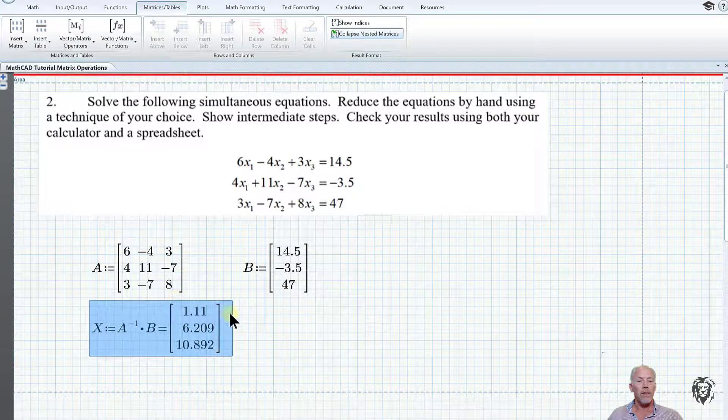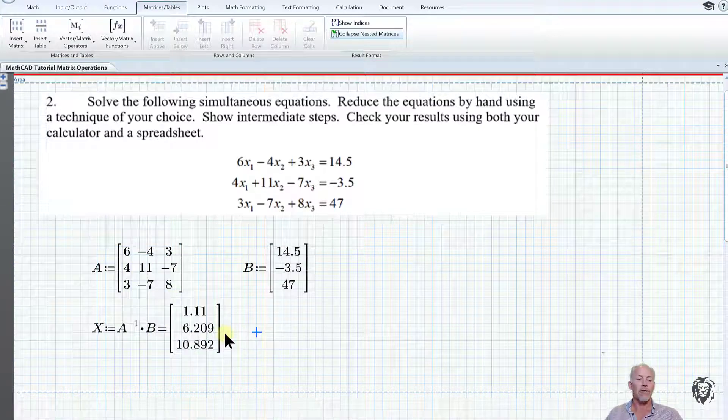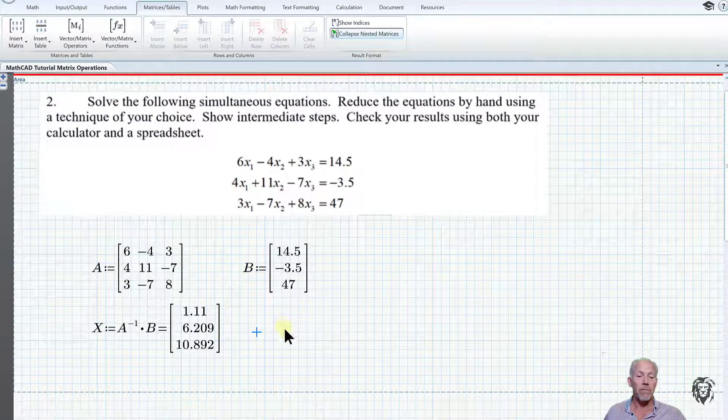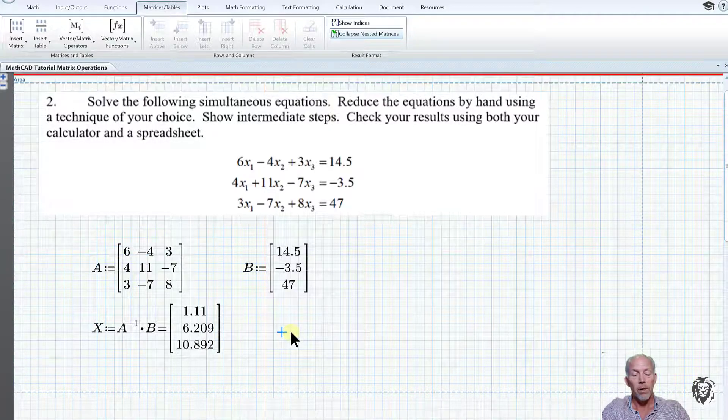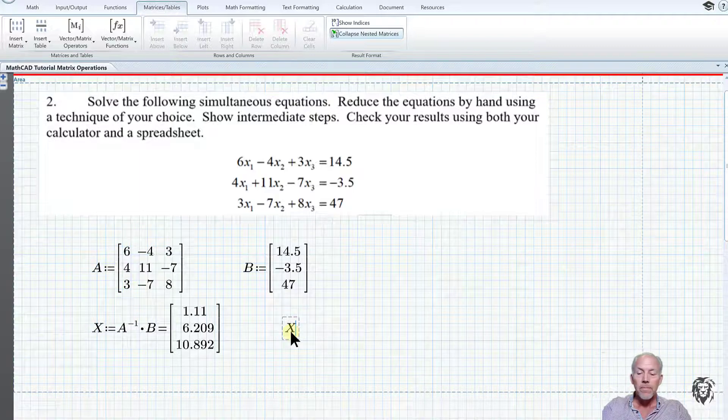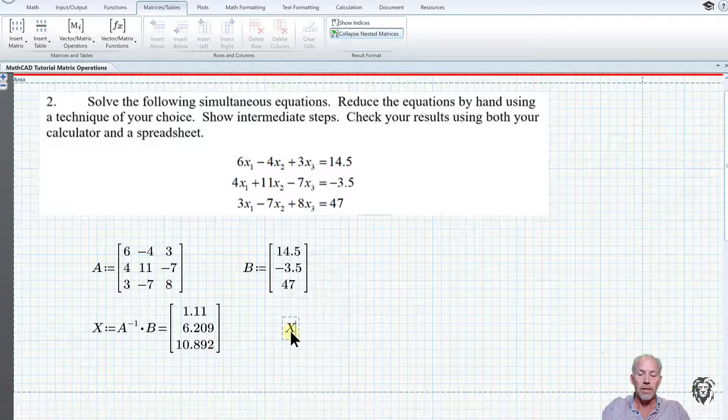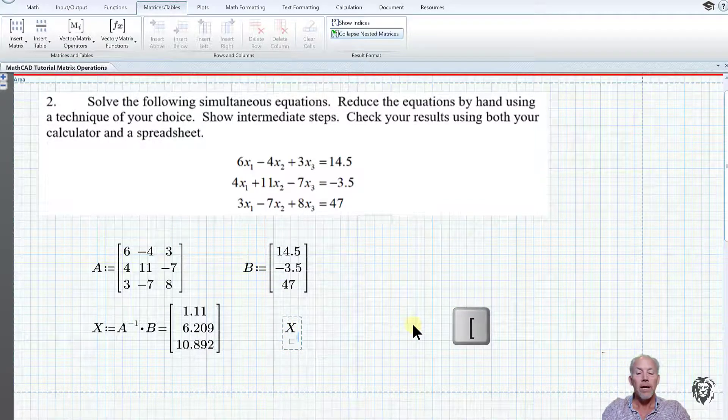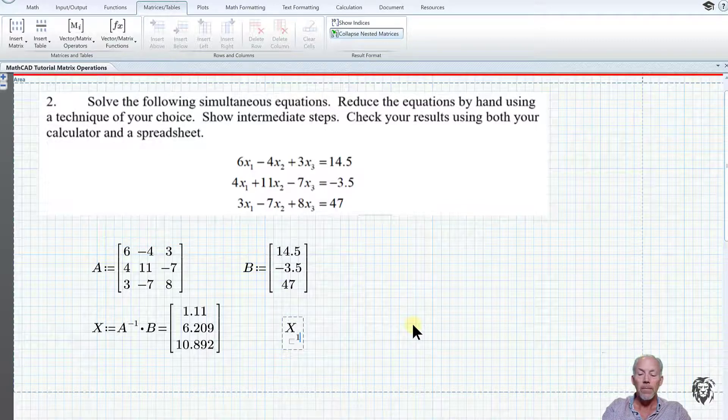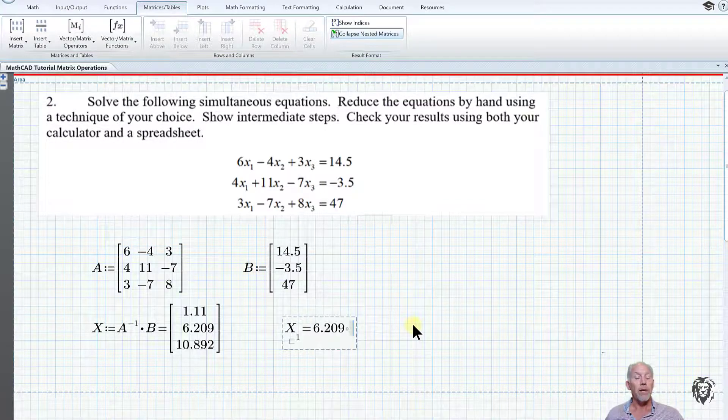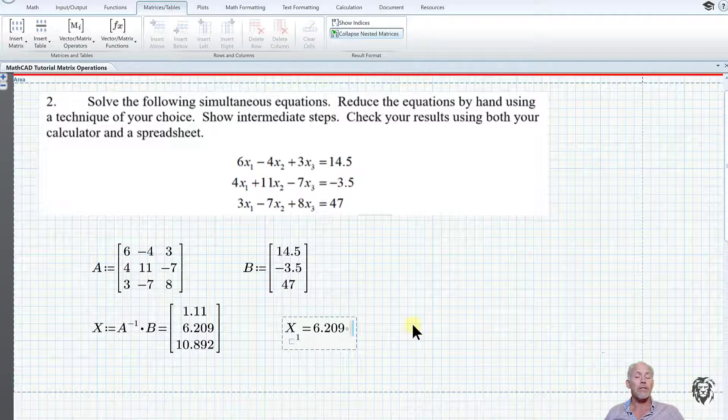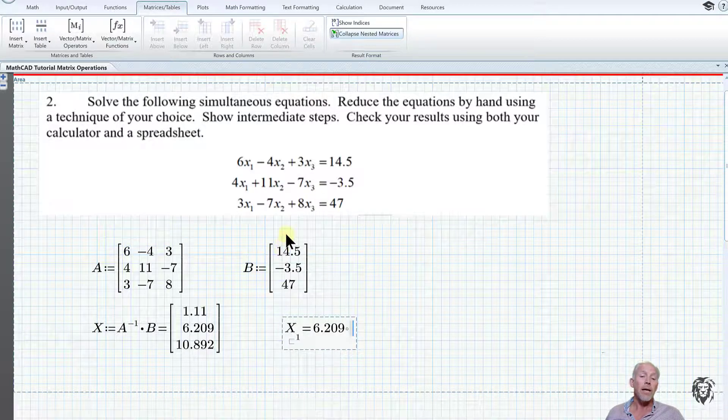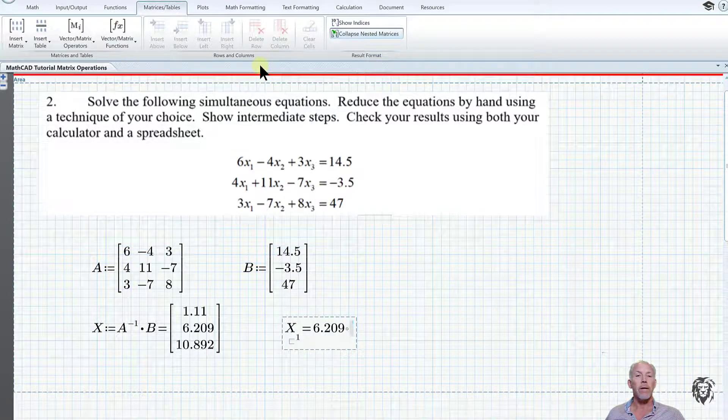One thing I wanted to show you: if this is in Excel, you'd have easy access to those components by the cell number. We can reference them here using the array subscript with the square brackets key. If I choose x1 and hit our equal sign, we get a value of 6.209. You ask yourself why is that x1 and not x2? That's because we haven't switched our origin.